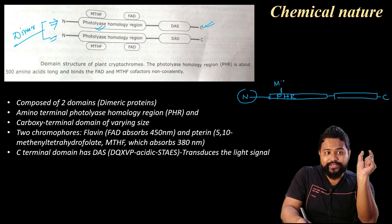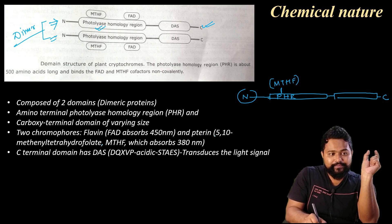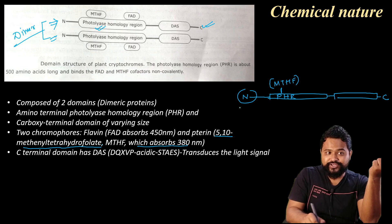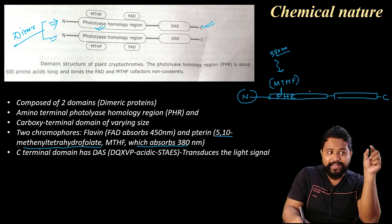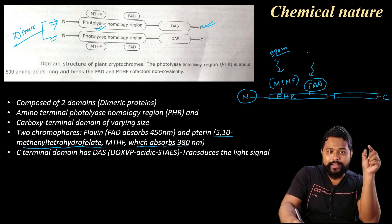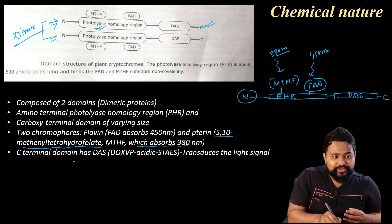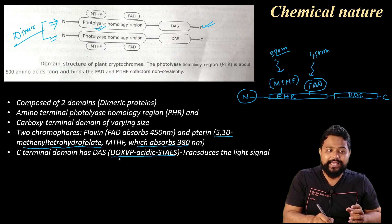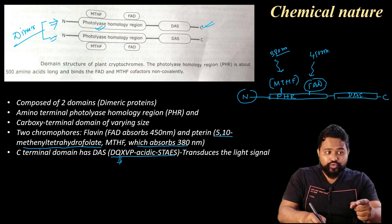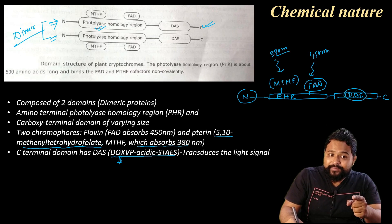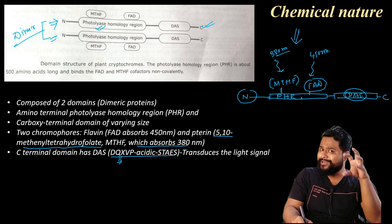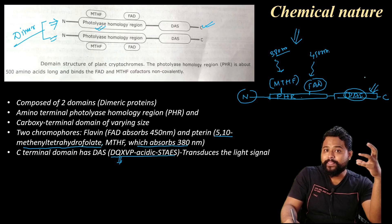This is MTHF — 5,10-methenyltetrahydrofolate — which is able to absorb light around 380 nanometers. The other region contains FAD, which absorbs sunlight at 450 nanometers. The C-terminal contains the DAS region, also known as the DQXVP Acidic Stays region, comprising specific amino acid sequences at the C-terminal.